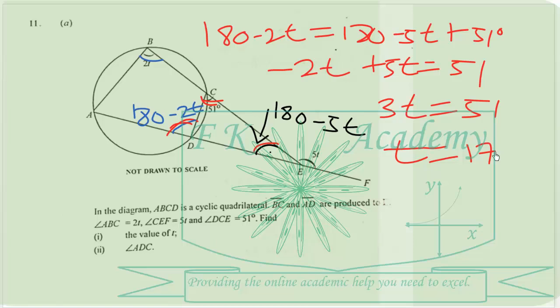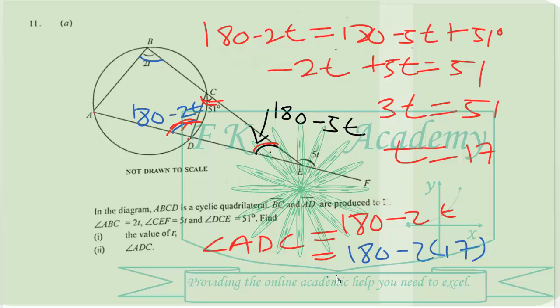If T is 17, angle ADC is equal to 180 minus 2T. So that will be 180 minus 2 times 17, which should be equal to 180 minus 34.